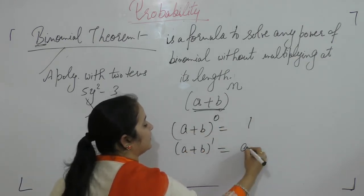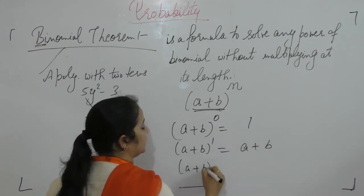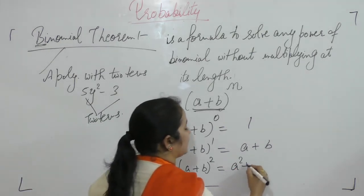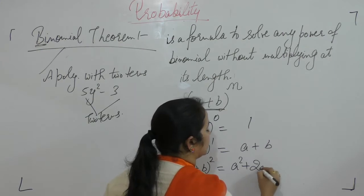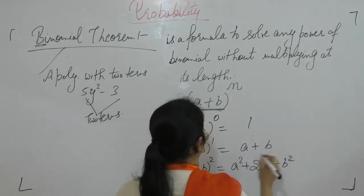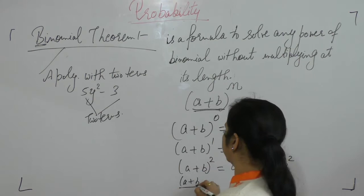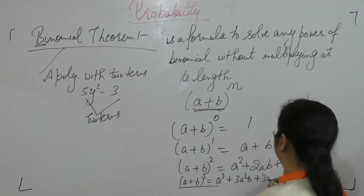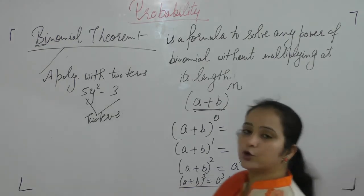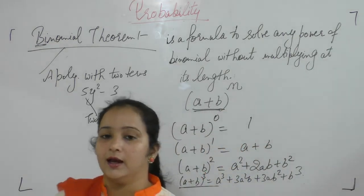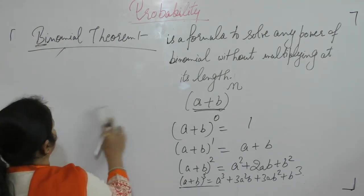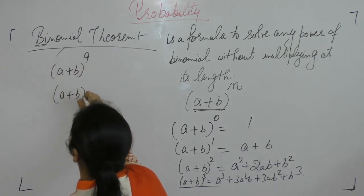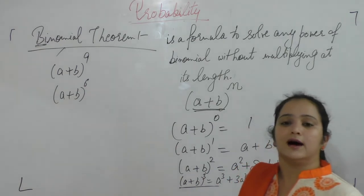The formula for A plus B whole square is A squared plus B squared plus 2AB. Next, A plus B whole cube equals A cubed plus 3A squared B plus 3AB squared plus B cubed. We already know these formulas, but what about higher powers like A plus B to the power 9, 18, 20, or even 100?